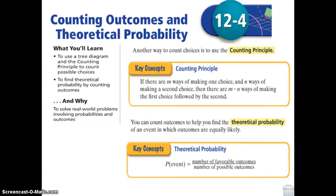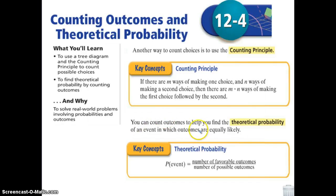Let's talk about these quick vocab words. The first one is the counting principle. If there are m ways of making one choice and n ways of making a second choice, then all you have to do is take m times n. The other one is theoretical probability, which you can use by counting the outcomes to help you find the theoretical probability of an event in which outcomes are equally likely.